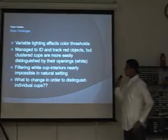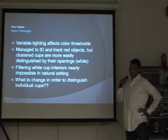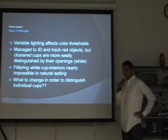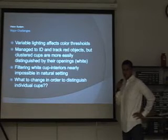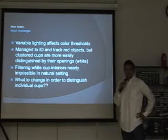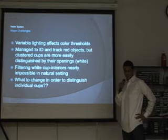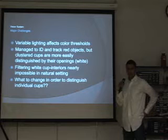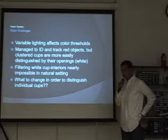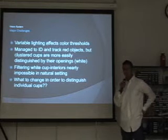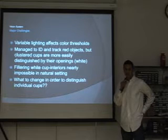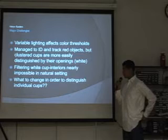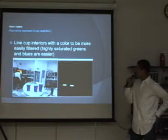Some other major challenges were that variable lighting conditions strongly affected the thresholds we needed to set for detecting red objects. We needed to set thresholds for HSV colors — hue, saturation, and value. In variable lighting, the cups reflect differently or are shaded differently. It took a while to calibrate that, but for the room we're demoing in today, we seem to have a pretty good calibration setup.